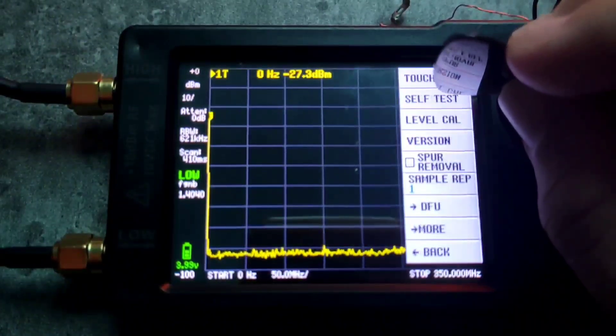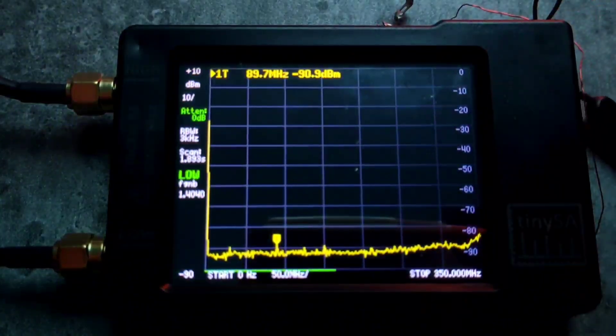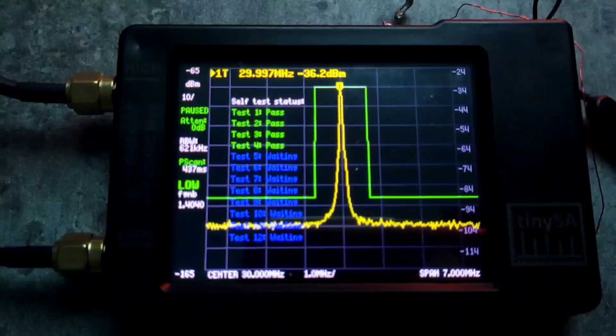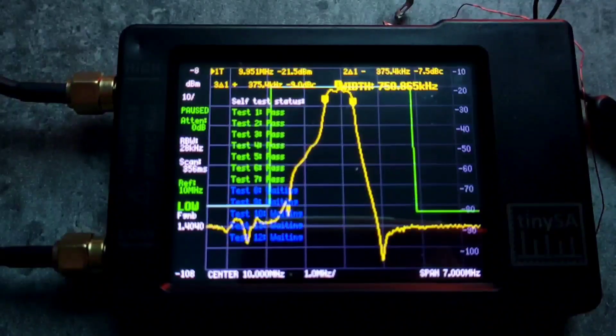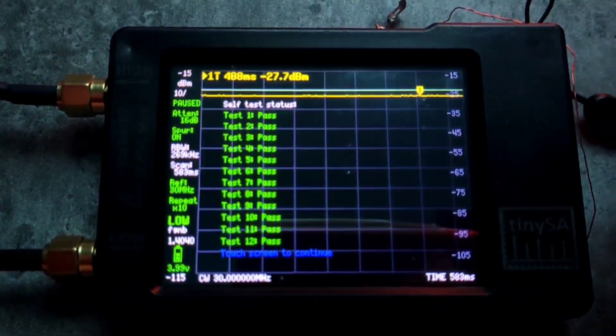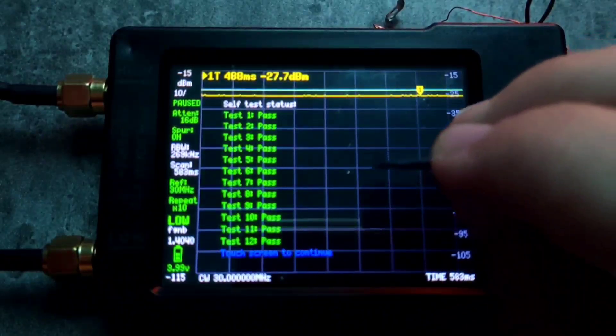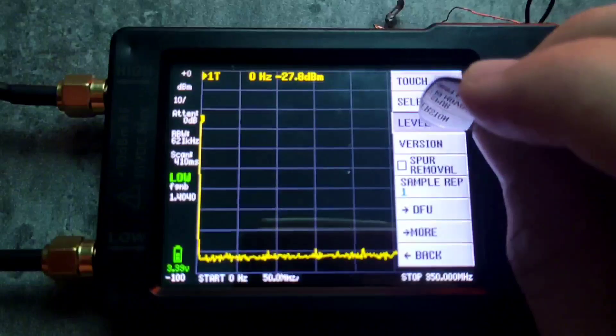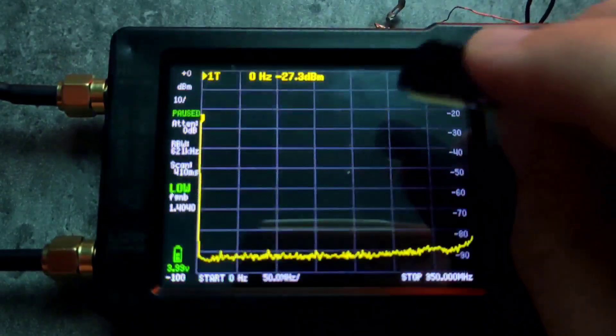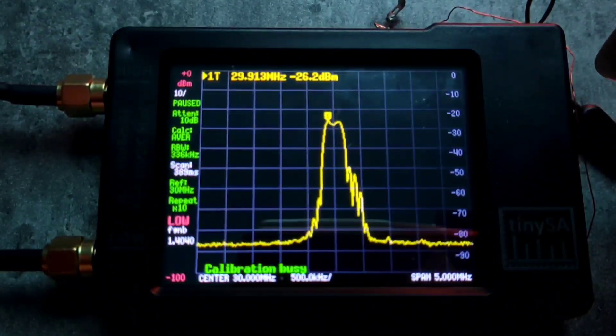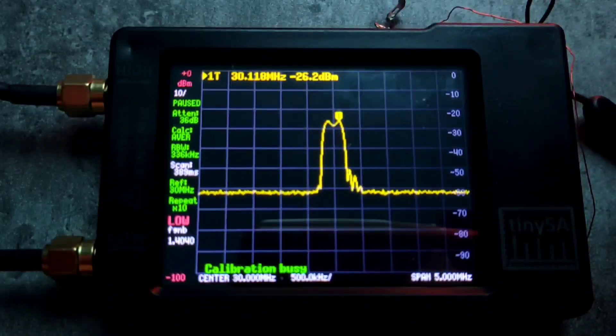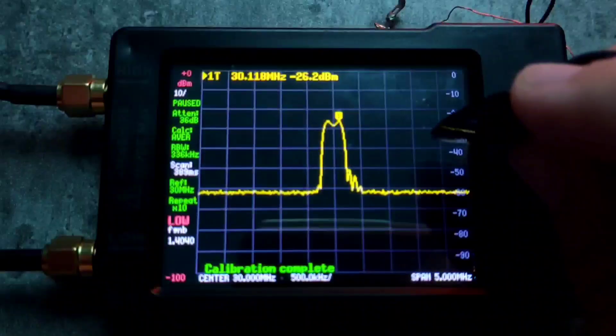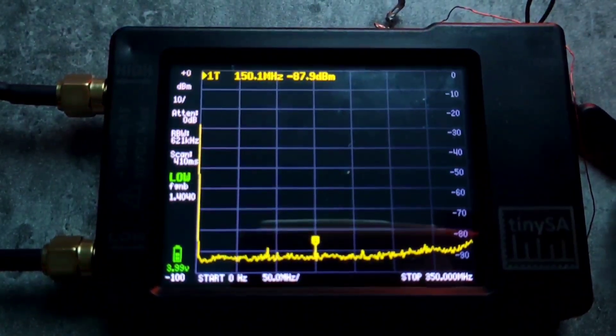First we are going to do a self test and then a level calibration. Now we are going to do a configuration and do a self test. Now it will run a self test. Keep in mind that this is more or less a test not a calibration as I will show you the actual calibration. Now that that is over it says touch screen to continue. Now we are going to go to configuration and do a level calibration. Now we are going to calibrate. Now we see it says calibration complete and we can also tap the screen to exit the calibration mode.